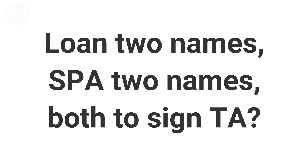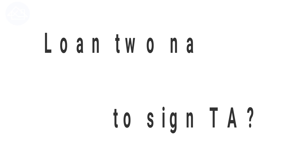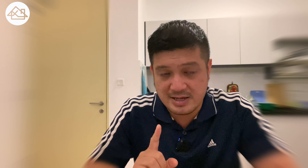Next question: if there are two names on the SPA and loan, does the tenancy agreement need to be signed by both? Actually, one person is enough to sign. However, regarding the income credited to the account — some banks, to be conservative, will only take half. For example, if rental is 2,000 per month, they take it as 1,000. There's no escaping this unless both applicants apply for the loan together.